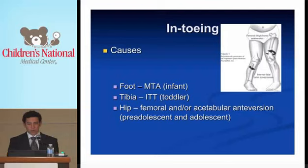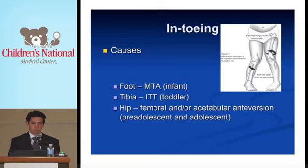If you see an in-toer, the causes are typically in the foot. If it's an infant, metatarsus adductus. In a toddler, it's typically the tibia — although not always — from internal tibial torsion. In an older pre-adolescent or adolescent, it tends to be coming from the hip due to femoral or acetabular anteversion — basically hip anteversion, internal rotation through the hip.